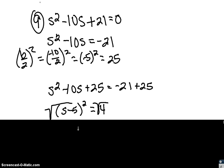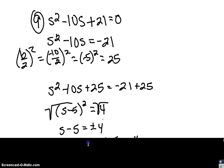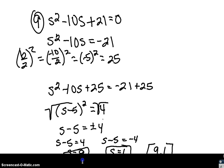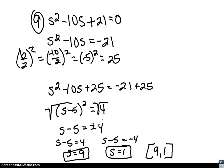To solve, square root both sides. Remember, when you square root a number you get both a plus and minus answer. This gives s minus 5 equals plus or minus 2 — wait, plus or minus 4. Writing two equations: s minus 5 equals 4 and s minus 5 equals negative 4. Solving gives s equals 9 and s equals 1.